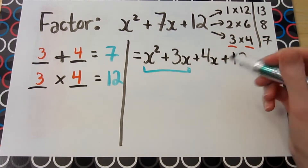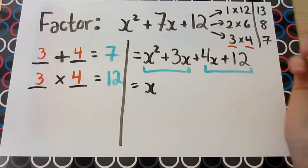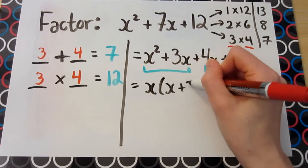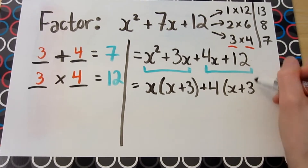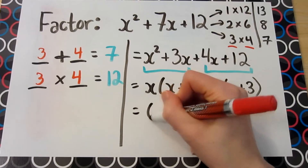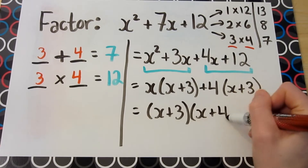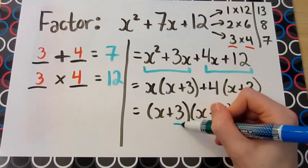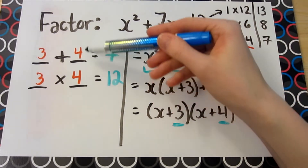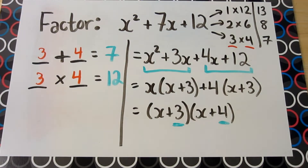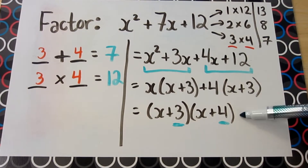We look at the first set of terms and then the second set of terms. From the first set, we can factor out an x, leaving behind x plus 3. And from the second set of terms, the common factor is 4, leaving behind x plus 3 again. Meaning, when you common factor at this stage, we're left with x plus 3 multiplied by x plus 4. Notice that the 3 and the 4 in each factor are the numbers we found at the beginning. Essentially, once you find your two numbers, you can go straight to this step.